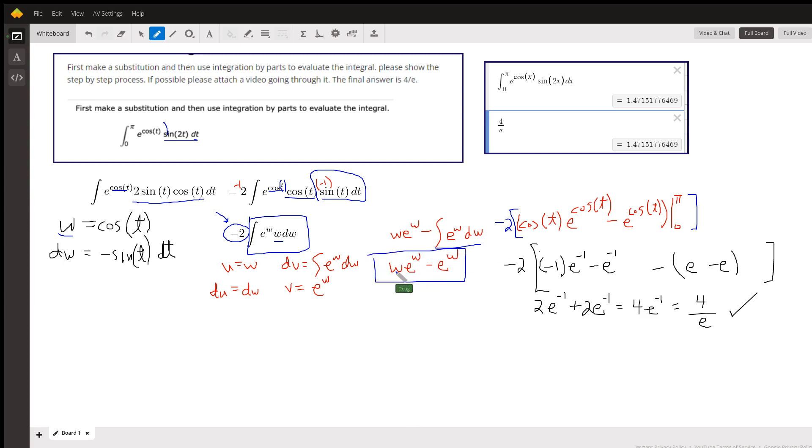Finally, we're going to replace w with cosine of t. And at the same time I'll add on this negative 2 factor. So negative 2 times w cosine of t e to the w minus e to the w, evaluated from 0 to π.